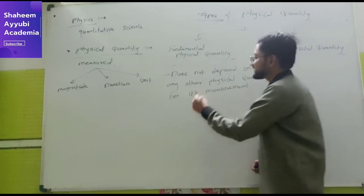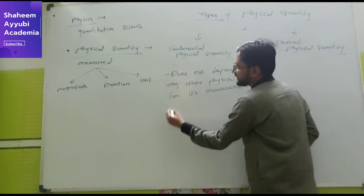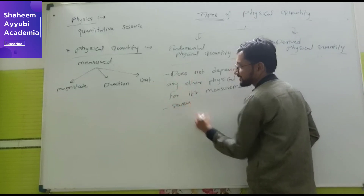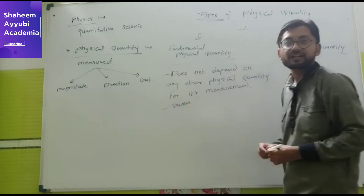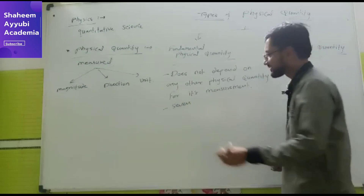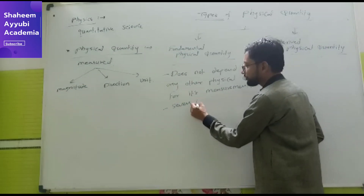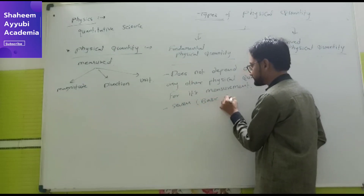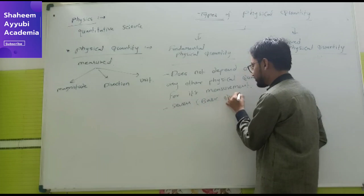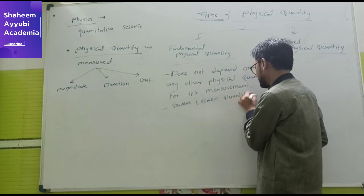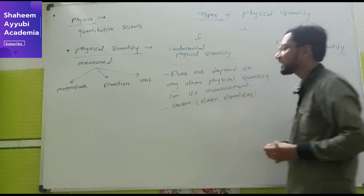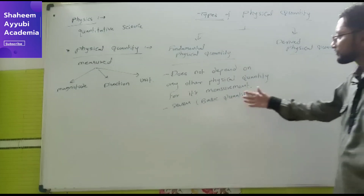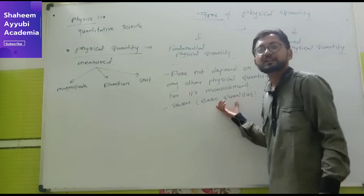In physics there are seven fundamental quantities, which are also called basic quantities. Let us look at what we call basic physical quantities.